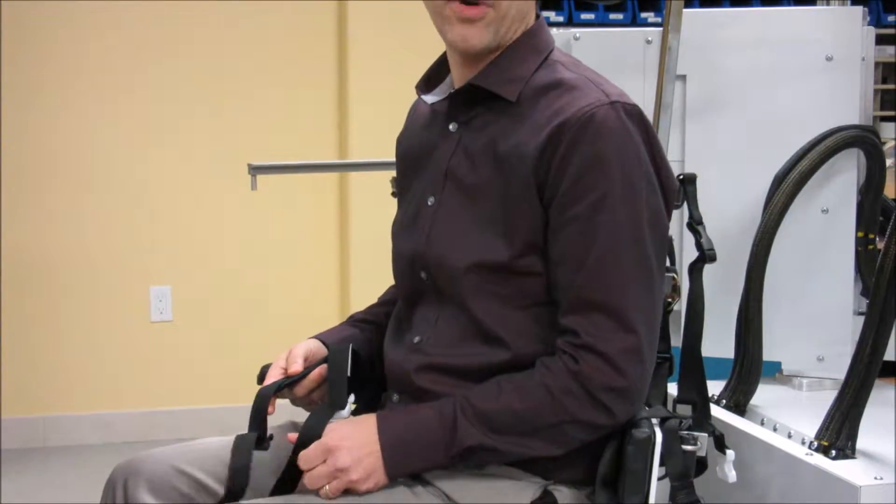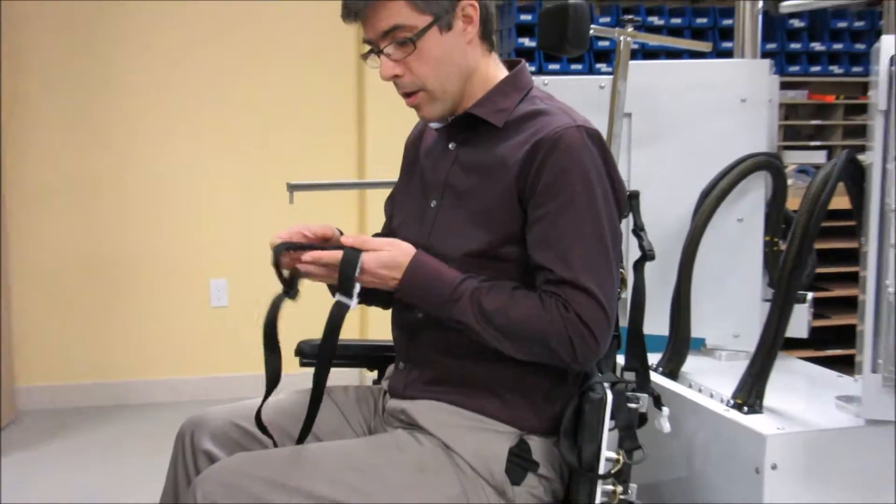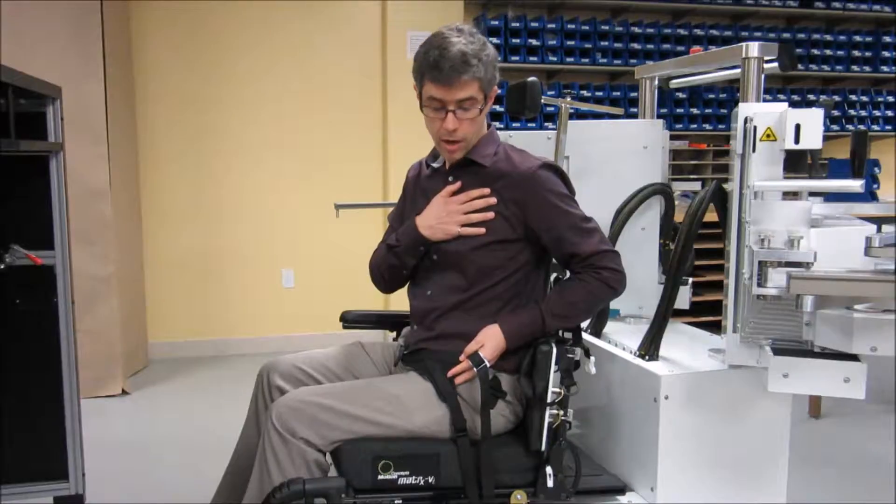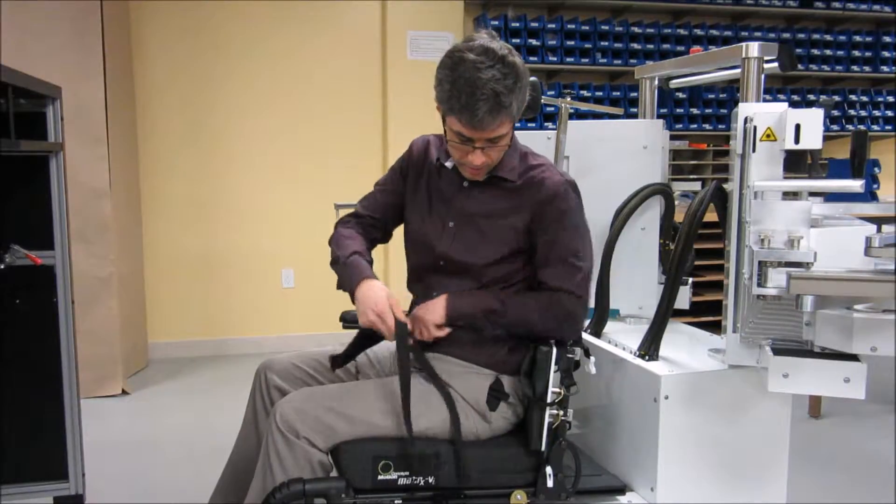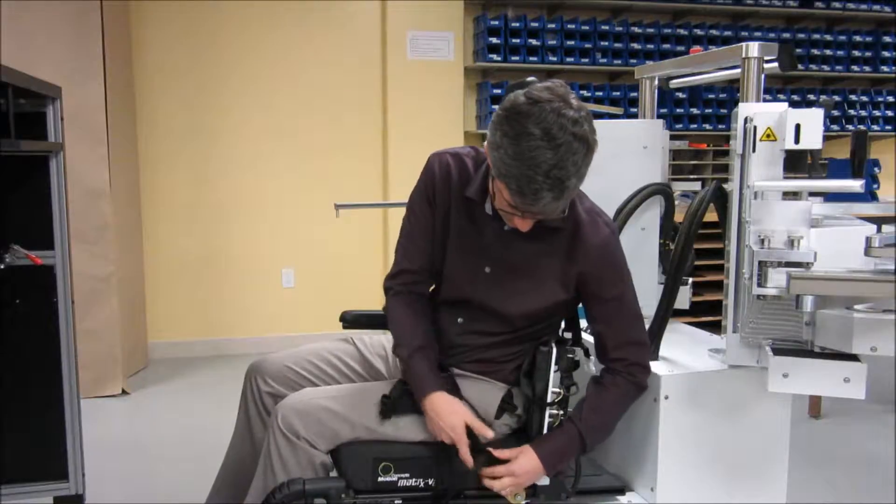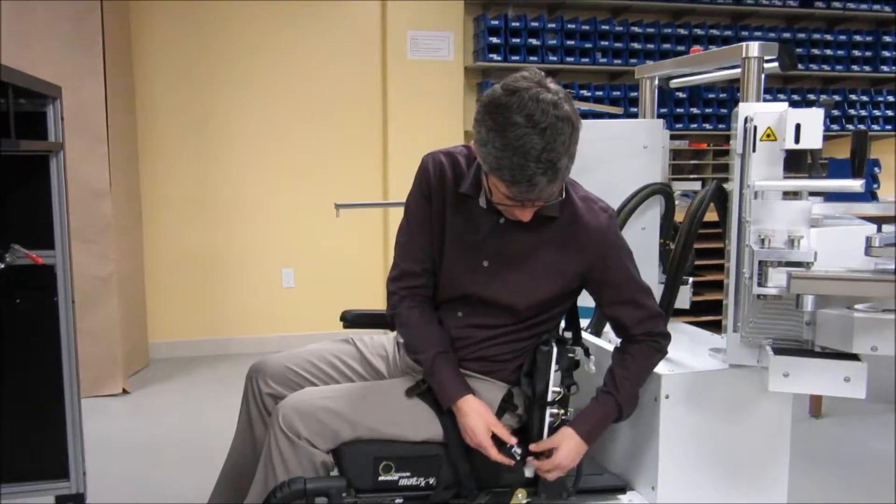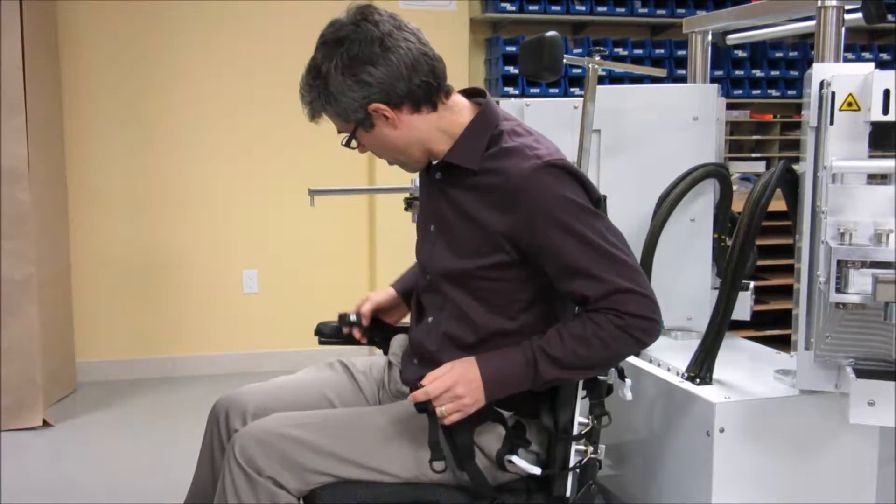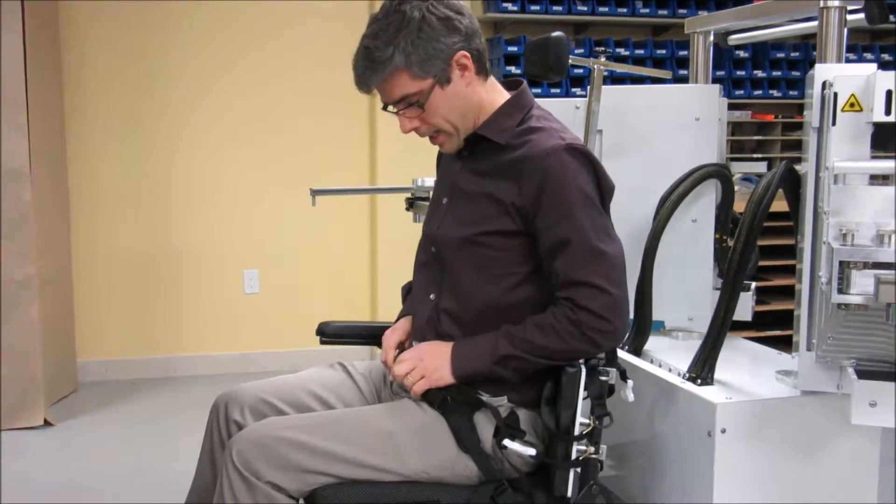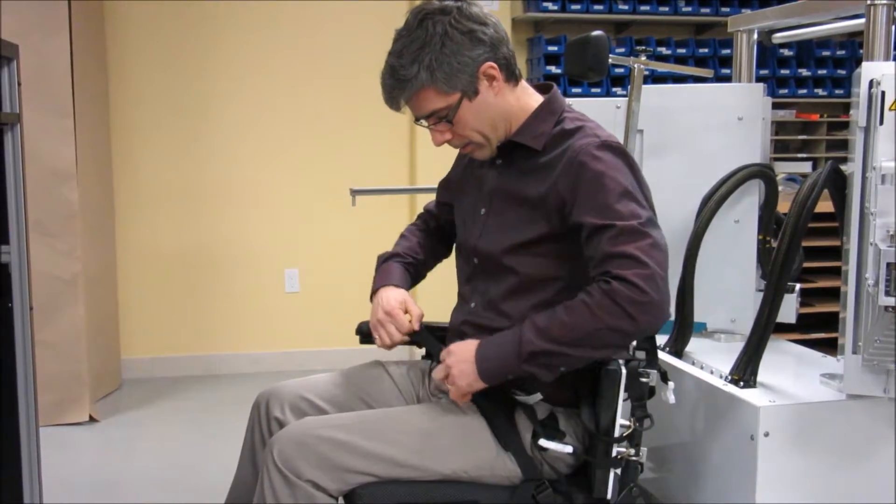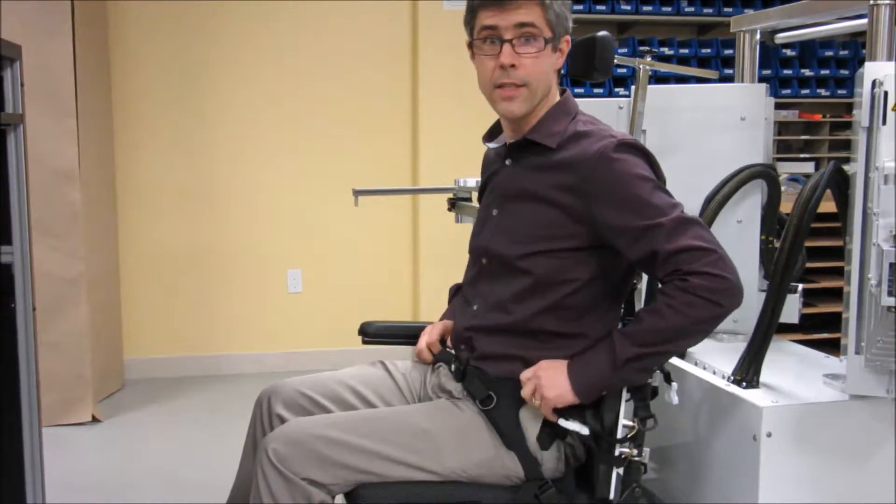If your subject has posture stability problems, you may need to install a hip belt and also an upper chest harness. The hip belt, there's one that clips for each side. You can see that I am attaching it on this side and then clip the two sides together and tighten as necessary.